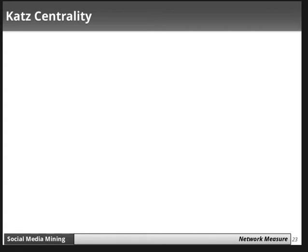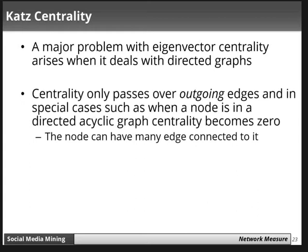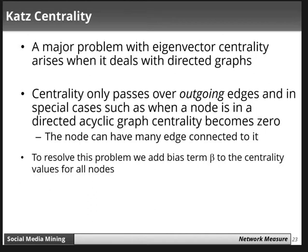In this video I am going to explain Katz centrality. In the earlier video you understood what is meant by centrality, degree centrality, and eigenvector centrality. There is a major problem with eigenvector centrality when it deals with a directed graph. In a directed acyclic graph, centrality only passes over the outgoing edge, and a node can have many edges connected to it yet its centrality becomes zero.